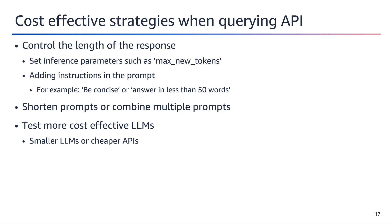Adding instructions in the prompt like 'be concise' or 'answer in less than 50 words' can also help reduce response length. Shortening prompts or combining multiple prompts into one can reduce input length and cost. Testing more cost-effective LLMs or using smaller, cheaper APIs are other potential strategies to consider for optimizing costs when querying language models.